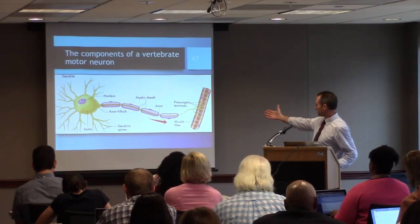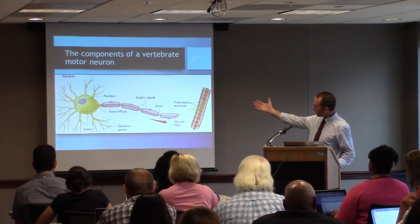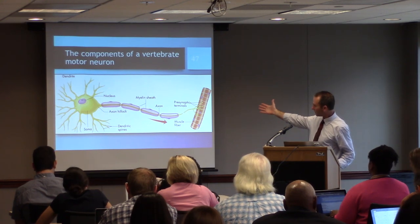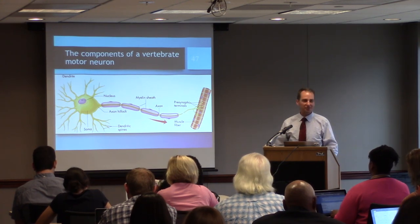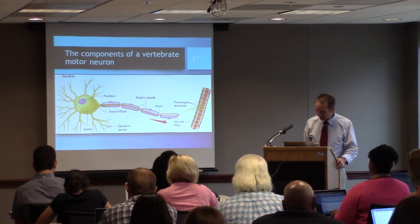Note that some of these neurons have these purple hotdog buns wrapped around them — that's the myelin sheath. We'll talk a little bit about that later.